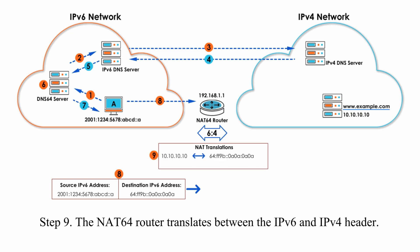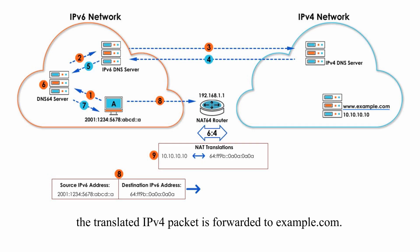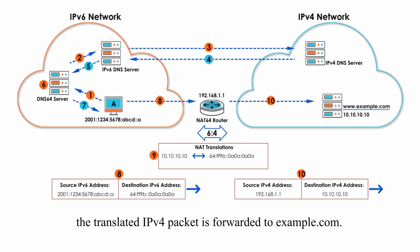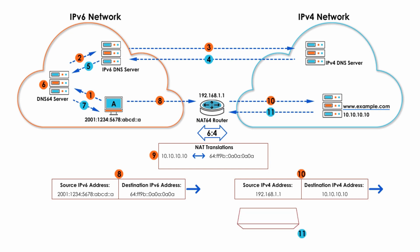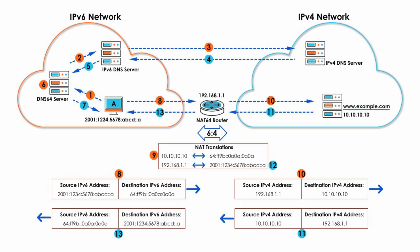Step 9: The NAT64 router translates between the IPv6 and IPv4 header. After the NAT64 translation, the translated IPv4 packet is forwarded to example.com — that's step 10. Step 11: The example.com server replies to the NAT64 router with an IPv4 packet. Then the NAT64 router translates the IPv4 packet into an IPv6 packet — that's step 12. After the translation, the IPv6 packet is forwarded to host A. A round trip is made.